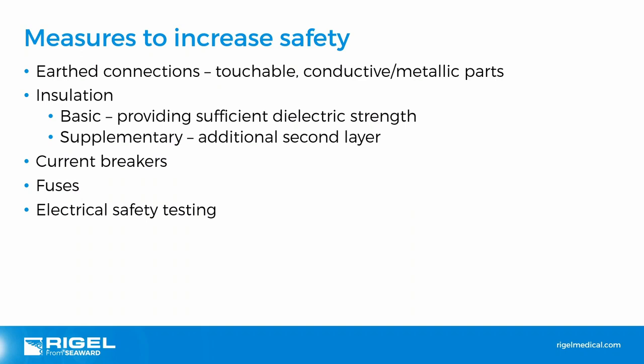We also have insulation — basic insulation provides dielectric strength, the ability to withstand a required voltage without breaking down. Supplementary insulation is an added layer to protect against electrocution, found in class 2 devices, also known as double insulation. Current breakers detect excess current and switch off to prevent circuit overloads. Fuses provide burnout after certain current levels are exceeded, giving overcurrent protection. Electrical safety testing is performed to ensure a device is functioning safely and will continue to protect individuals in case of adverse events or failure conditions.